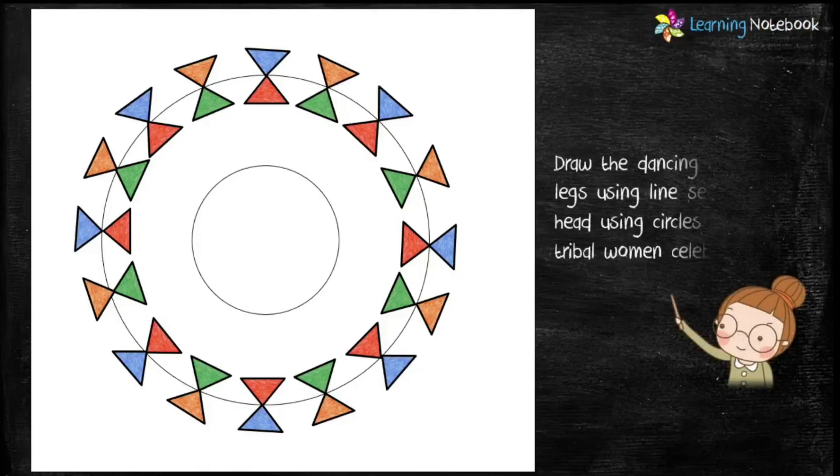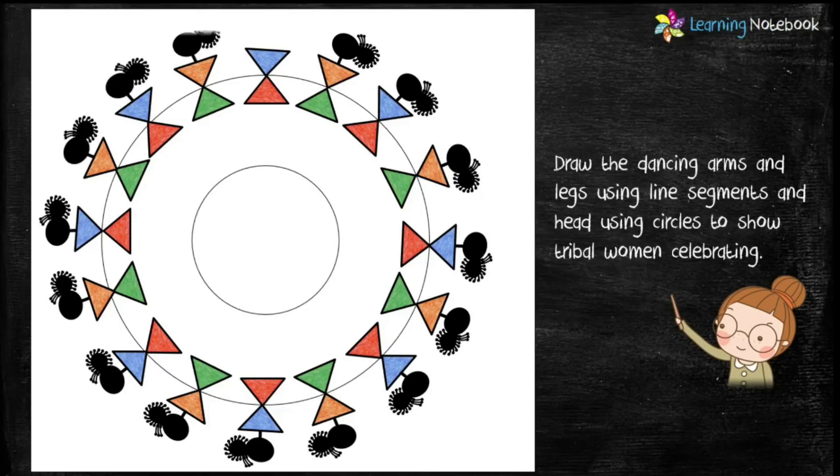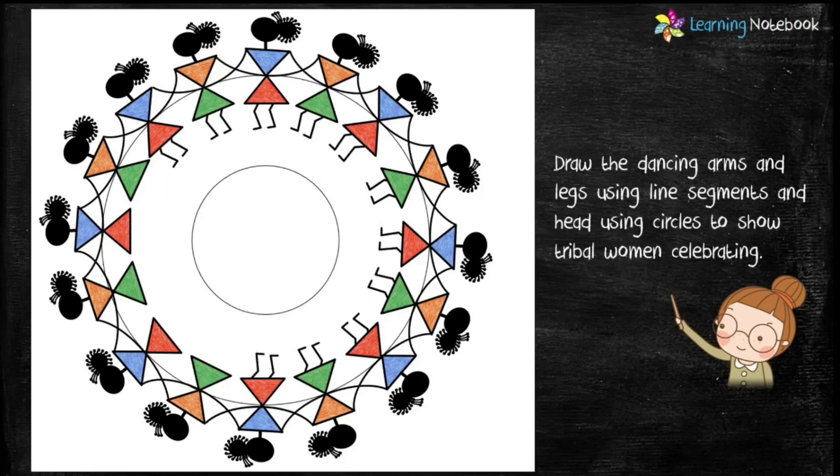So these triangles represent the body of the dancing women. Now let's draw their dancing arms and legs using line segments, and we draw their head using circles. So see how beautifully they are dancing together with hands behind the back of each other.